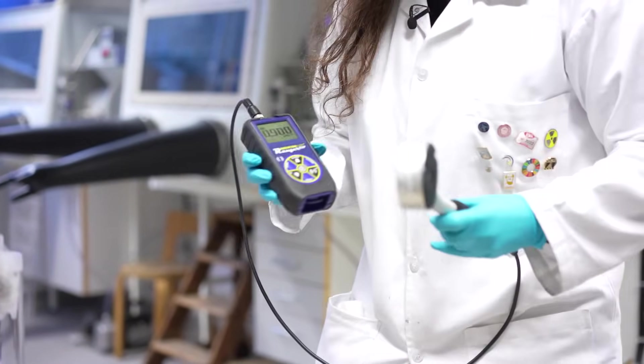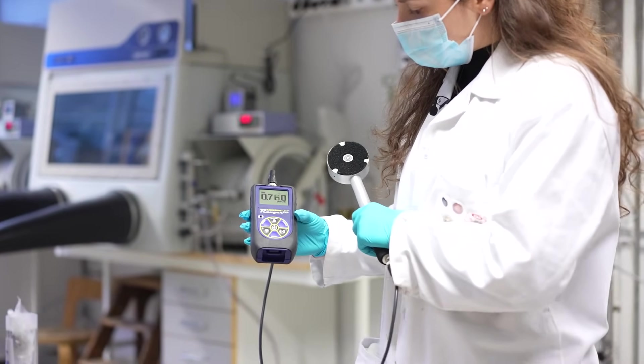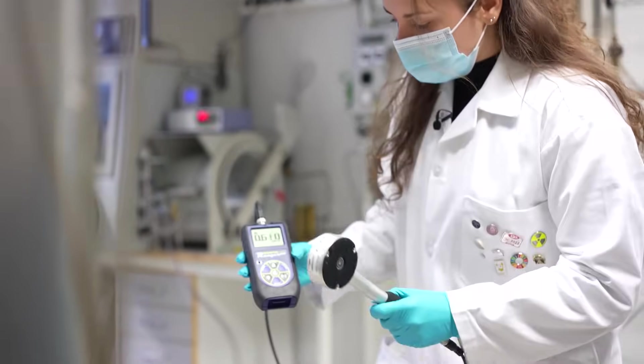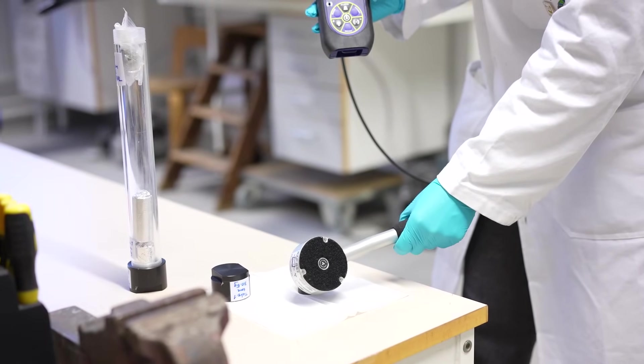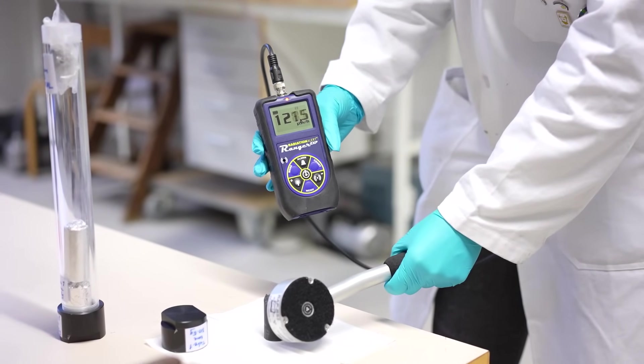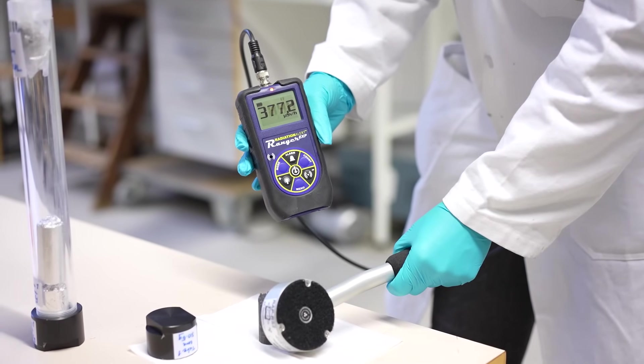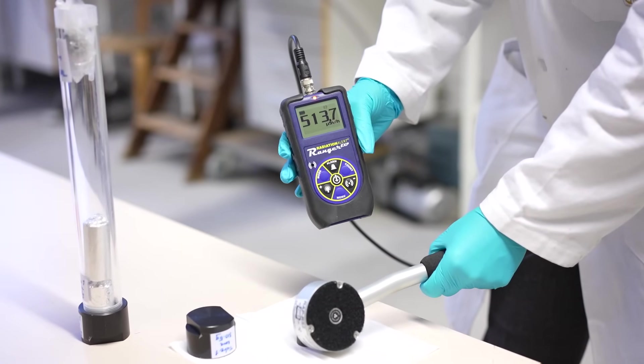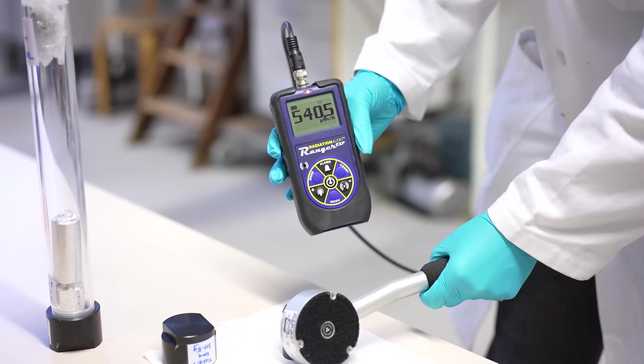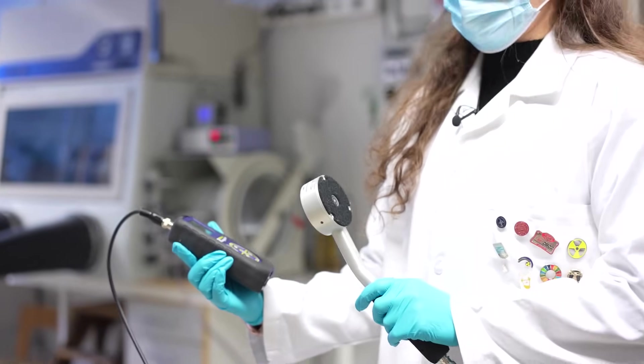Probably our favorite equipment in the lab is the Geiger counter. Pretty typical, low level when I'm not aiming it at anything. It's around 500 microsieverts per hour.